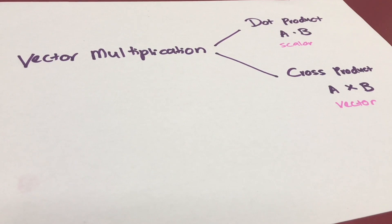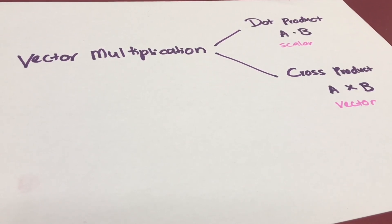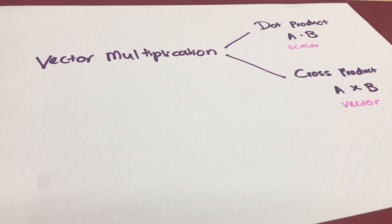How do we multiply two vectors together? There is more than one way to do this. The dot product gives a number as an answer — this is a scalar, not a vector. While the cross product of two vectors is another vector that is at a right angle to both vectors.